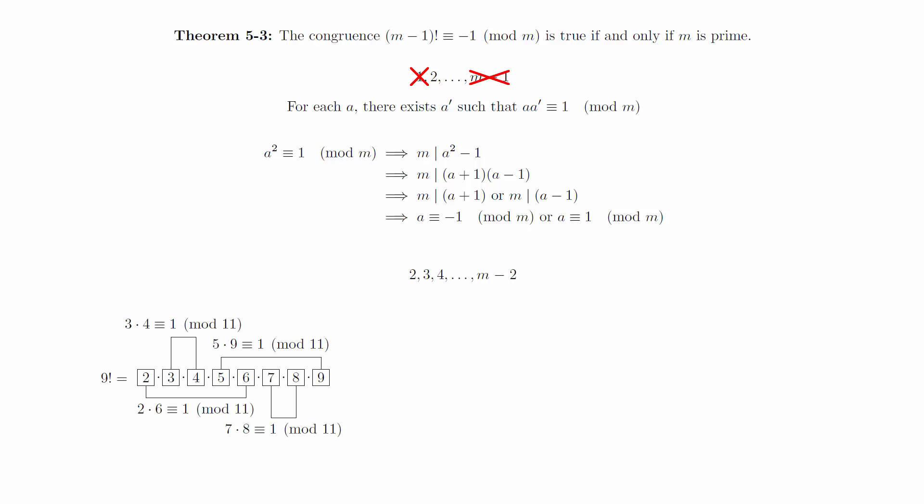This is shown for the case m is equal to 11. What this means is that if we multiply these values together, we will get 1 mod m. In other words, m minus 2 factorial is congruent to 1 mod m. By multiplying both sides of this by m minus 1, which is equivalent to negative 1 mod m, we can see that m minus 1 factorial is congruent to negative 1 mod m when m is prime.